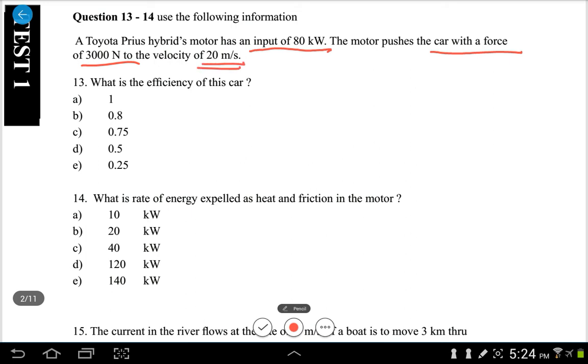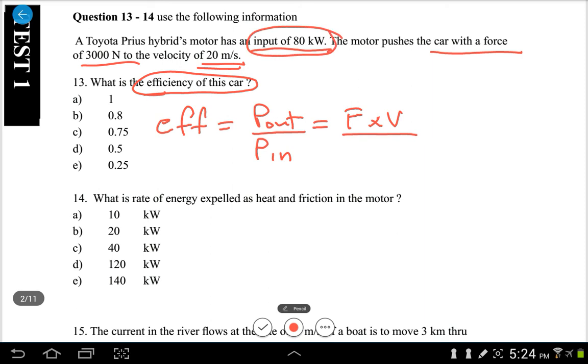The question says what is the efficiency of this car? So we know that efficiency equals power output divided by power input. Now to calculate the power output, we'll use the formula force multiplied by velocity. Since we know the input, this is the input, so we just put here 80 kilowatts.